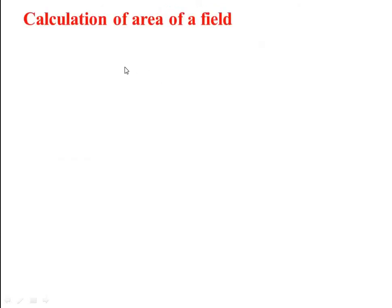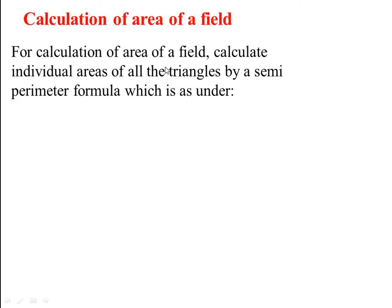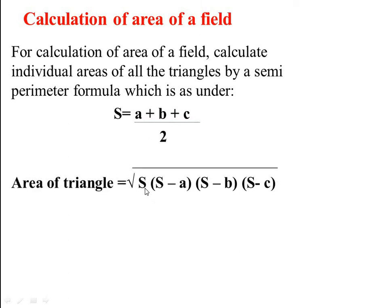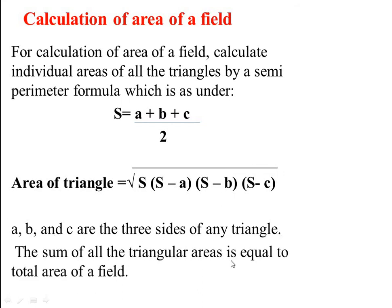Coming to the calculation of area of a field. For calculation of area of a field, calculate individual areas of all the triangles by a semi-perimeter formula which is as under: s equals small a plus b plus c divided by 2, and area of triangle equals square root of s in bracket s minus a, another bracket s minus b, bracket close, then third bracket s minus c, third bracket close, where a, b, c are the three sides of any triangle. The sum of all the triangular areas is equal to the total area of field.